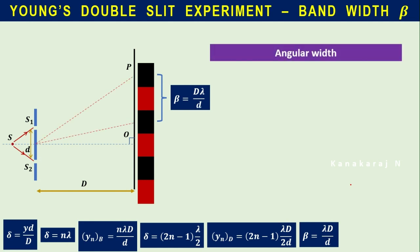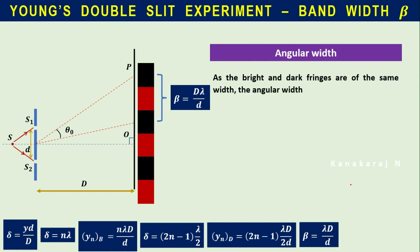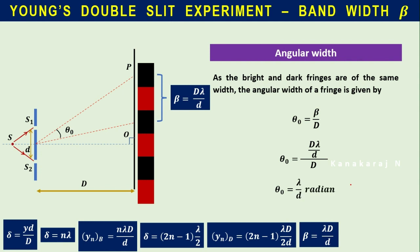Angular width: theta naught is the angle formed at the center of S1S2, between any two consecutive bright or dark fringes. Since bright and dark fringes are of the same width, the angular width of a fringe is given by theta naught = beta/D. Substituting beta = λD/d, we get theta naught = λ/d radians. This is the angular width of the bright or dark fringe.